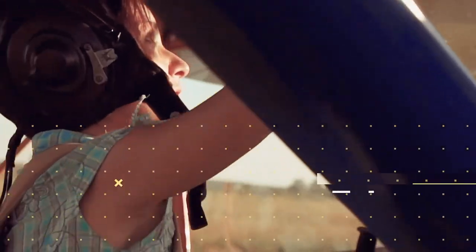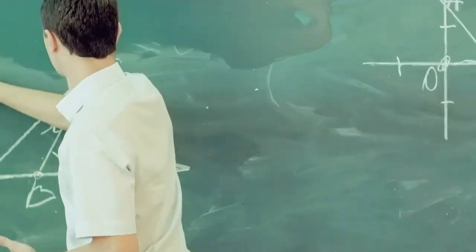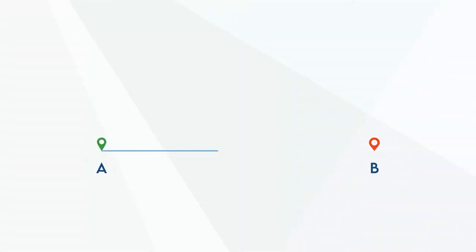Let's go. Now let's take a look at the convergency between rhumb line tracks and great circle tracks. You may remember that a rhumb line is a track which crosses all lines of longitude at the same angle, whereas a great circle is a track whose bearing is constantly changing. Generally speaking, we can draw the two different tracks roughly like this.